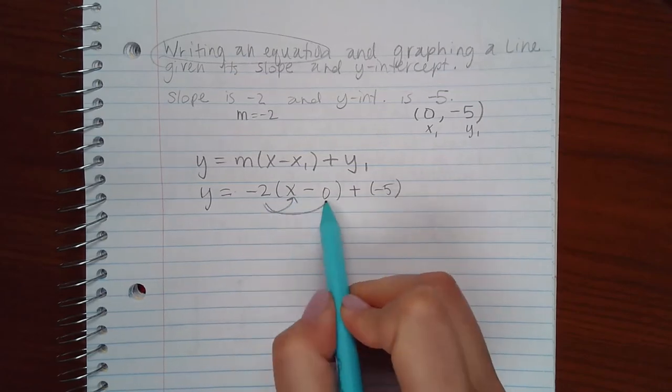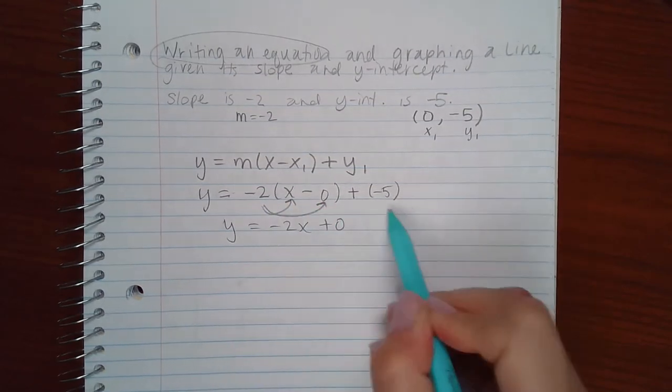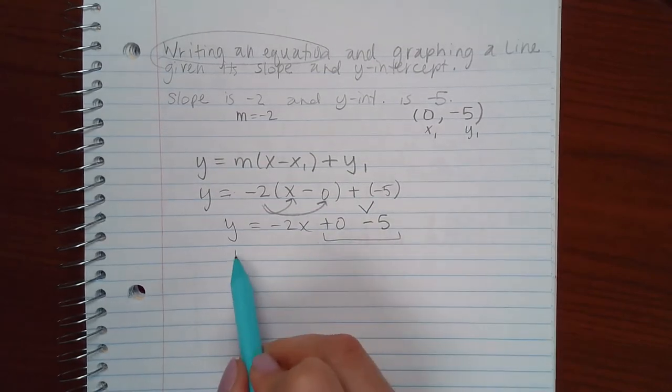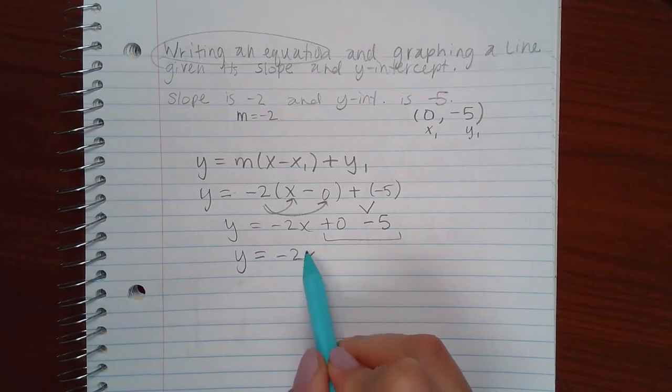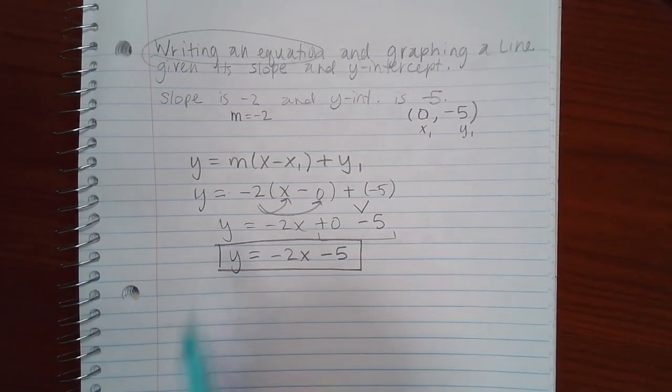We can distribute the slope and we get negative 2x plus 0. This makes minus 5. And if I combine my like terms, I get negative 2x minus 5. And this is the equation of the line.